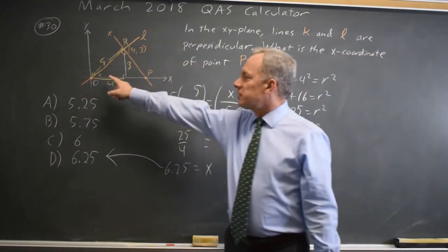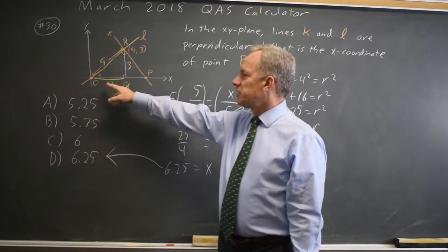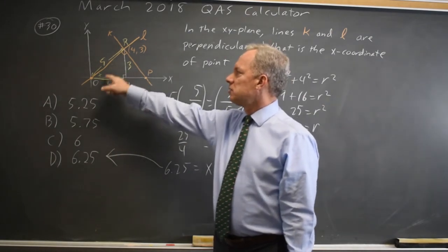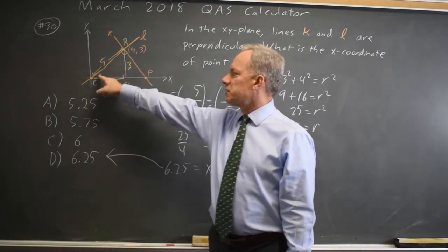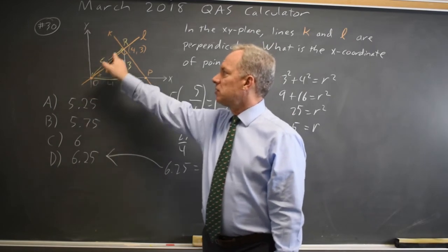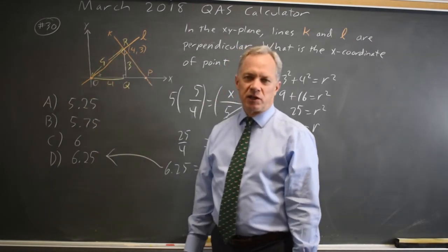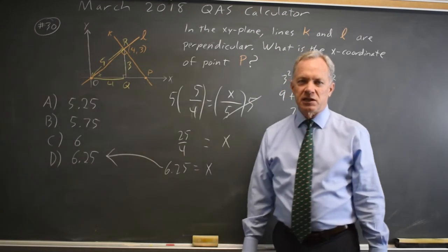You also need to recognize that if two right triangles, OQR and ORP, both share the same angle QOR, they're similar triangles, so corresponding sides have the same ratios.